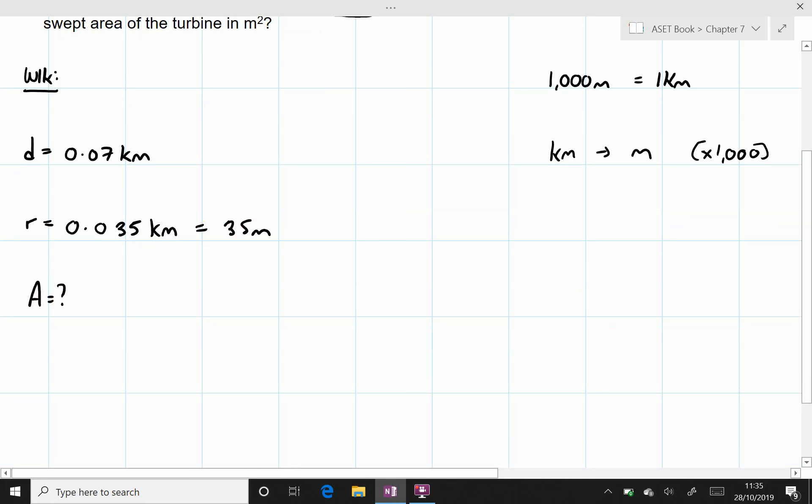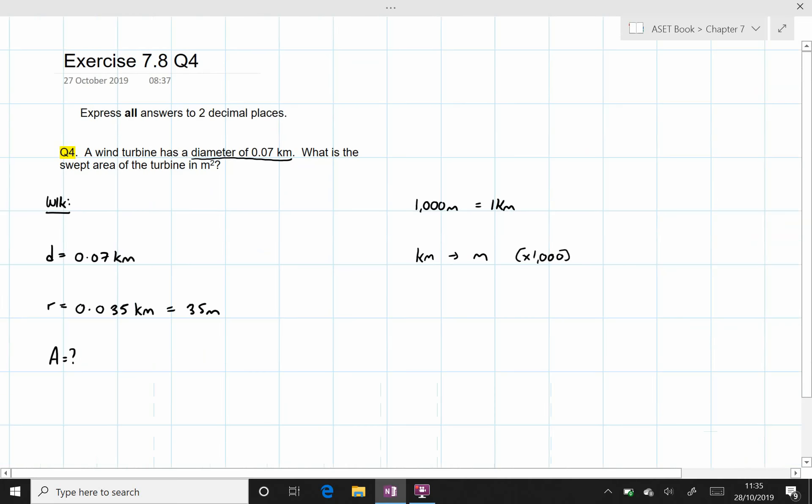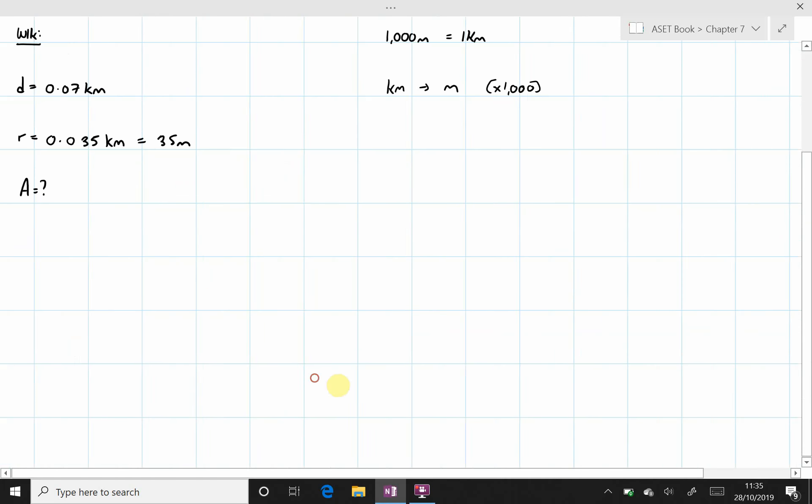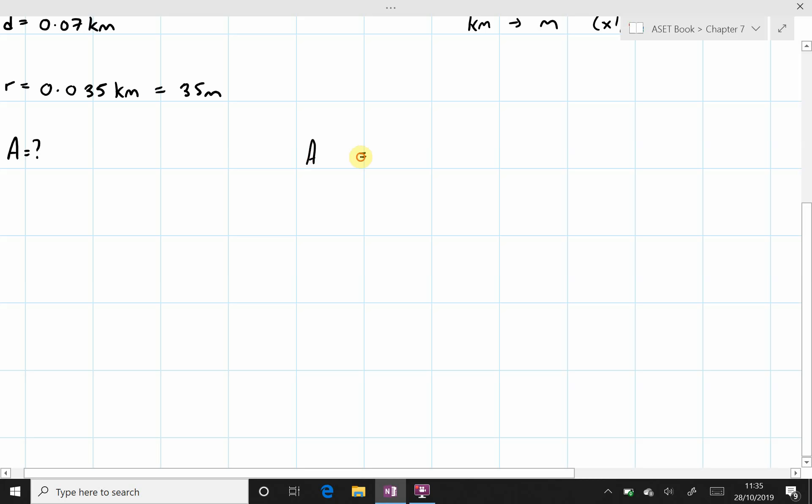And then this swept area, we are going to work that out now. The final answer again must be expressed to two decimal places. The area equals pi r squared.